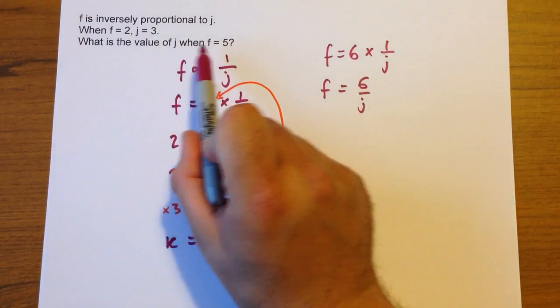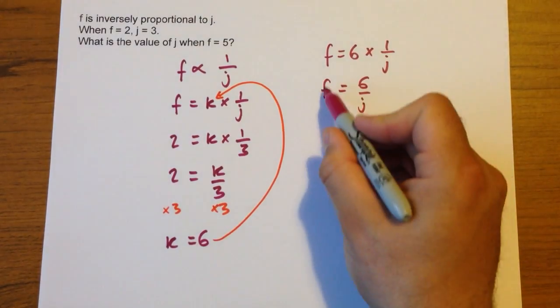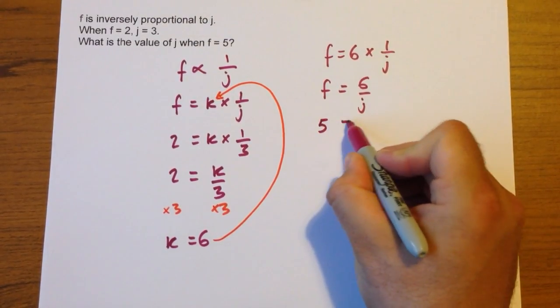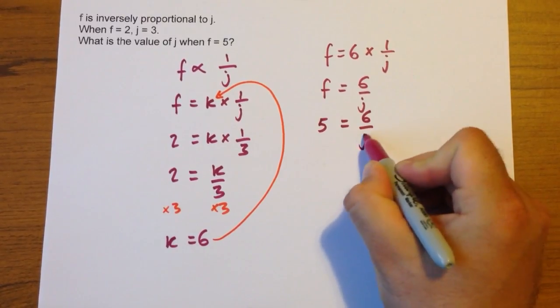Now we're asked to find the value of j when f equals 5, so substitute in what you know. 5 equals 6 over j.